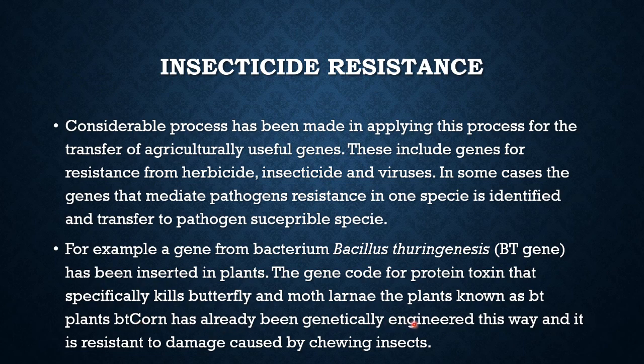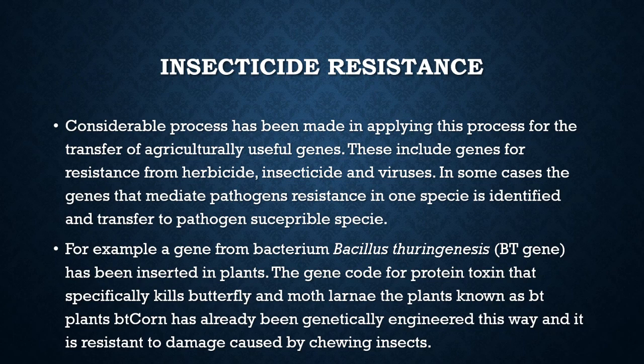Bt corn has been genetically engineered to be resistant to damage caused by chewing insects. The plant produces the toxin naturally. When butterfly or moth larvae consume the plant, the chemical toxin enters their body and kills them. So the crop itself acts as a genetically engineered insecticide.